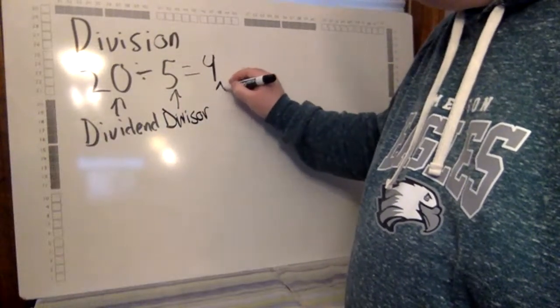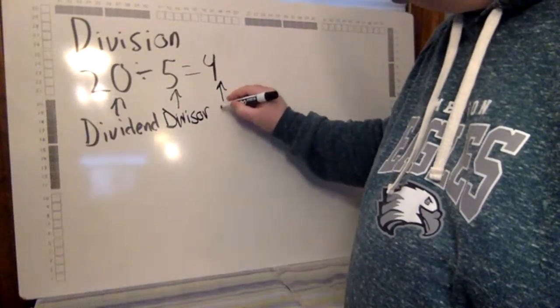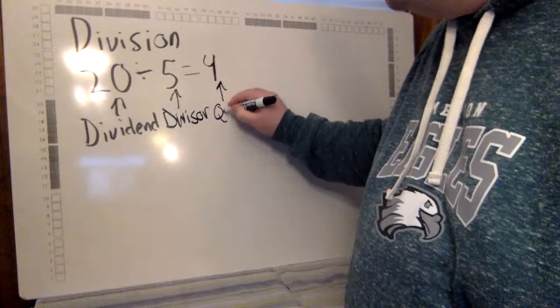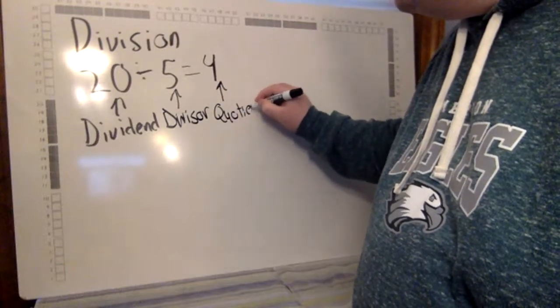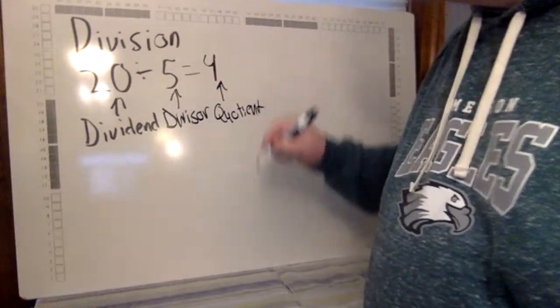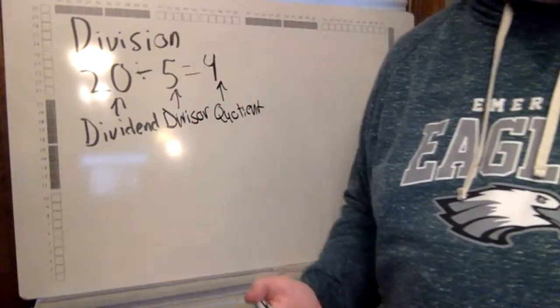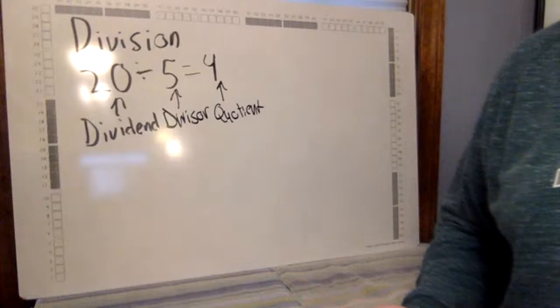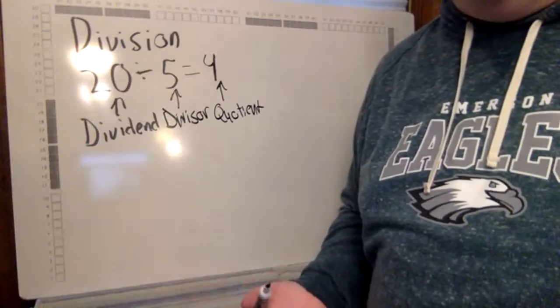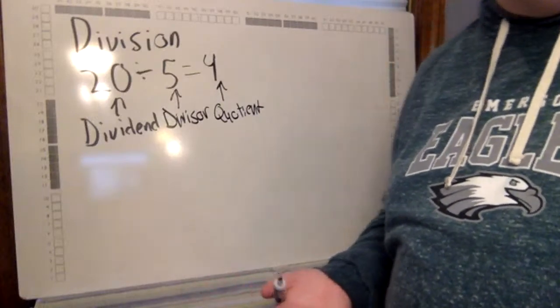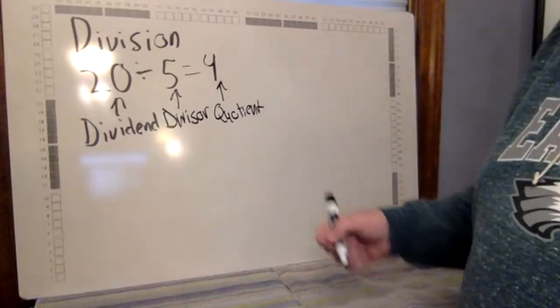The divisor is the amount of groups that you're going to break the dividend into. And last is the quotient — the quotient is the amount of items that go into each group.